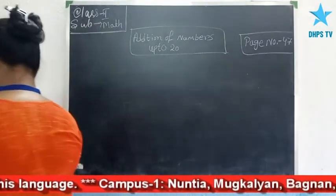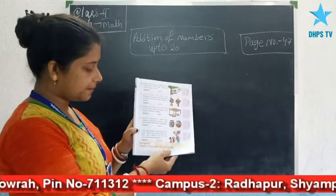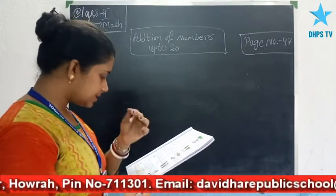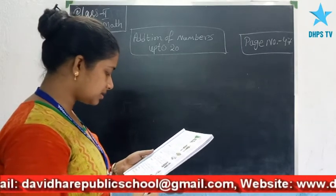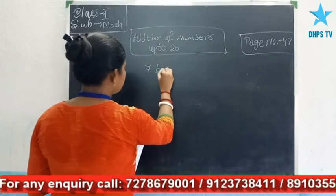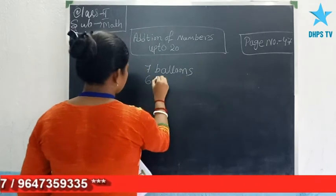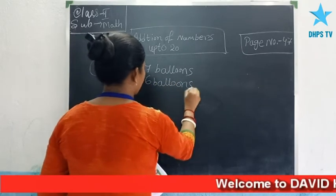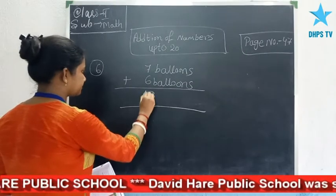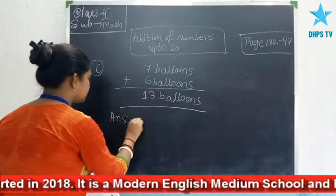Now see problem number 6 in page number 47. Vitya purchased 7 bells and her sister Silla purchased 6 bells. How many bells did the 2 sisters purchase together? Here also the problem is about addition. You have to add 7 and 6, and the answer is 13 bells. So the final answer is 13 bells.